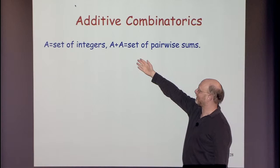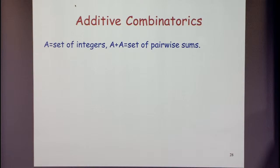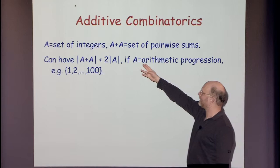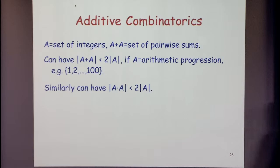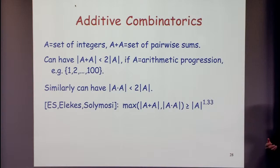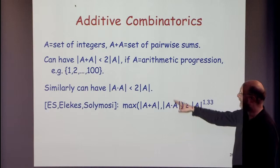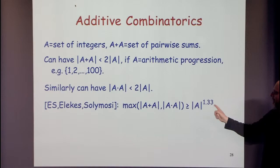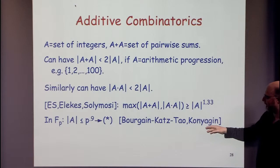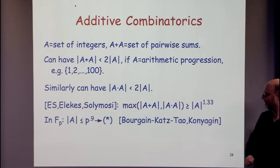If A is a set of integers, A + A is the set of pairwise sums, and A · A the set of pairwise products. A + A can be less than 2|A| if A is an arithmetic progression; similarly, A · A can be small if A is a geometric progression. The Erdős–Stone theorem and improvements show they can't both be small simultaneously. Over the reals, either the sum set or the product set must increase the size of A by a noticeable amount. Bourgain and Katz–Tao showed this holds even in finite fields — in F_p, if |A| ≤ p^0.9, you get a bound with a constant bigger than 1.